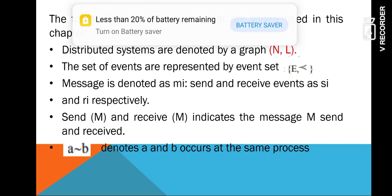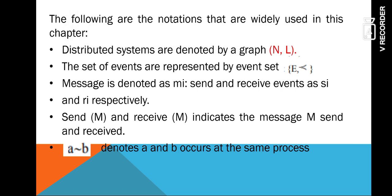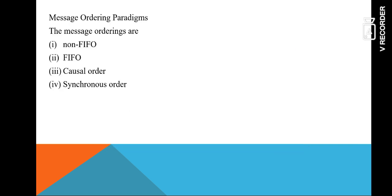Distributed systems are denoted as a graph which consists of a number of nodes and links. The set of events is represented by an event set, and the message is denoted as M_i. Send event is represented as S_i and receive event is represented as R_i. Send of M and receive of M refers to sending and receiving of a message. A tilde B denotes that A and B occur at the same process.